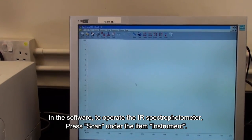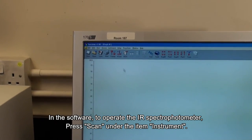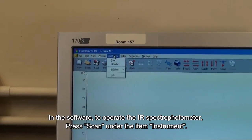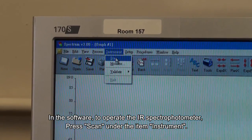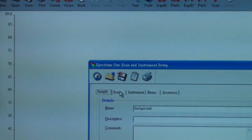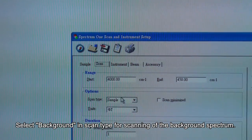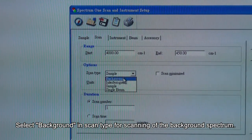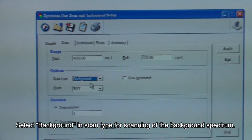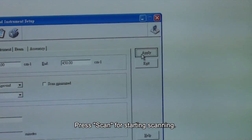In the software to operate the IR spectrophotometer, press scan under the item instrument. Select background in scan type for scanning of the background spectrum. Press scan for starting scanning.